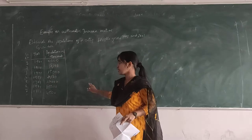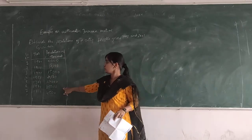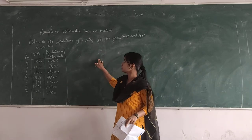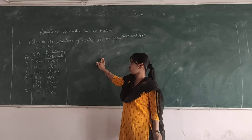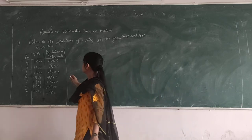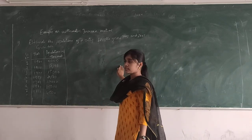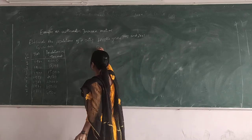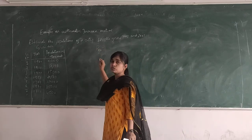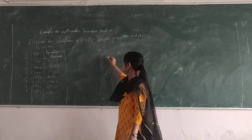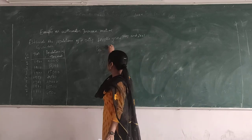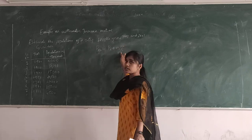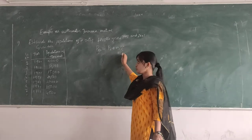By using this past data, we are going to calculate the population in the future using the arithmetic increase method. The formula for calculating the future population by this method is: Pn = P0 + n × x̄, where x̄ is the average incremental population increase.